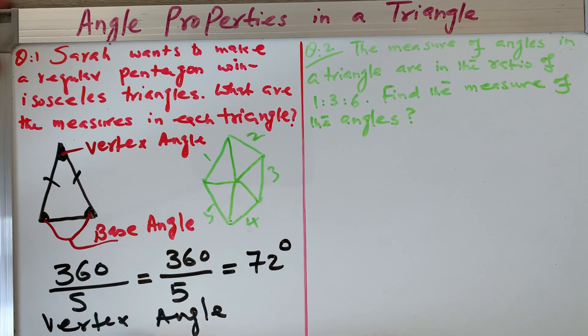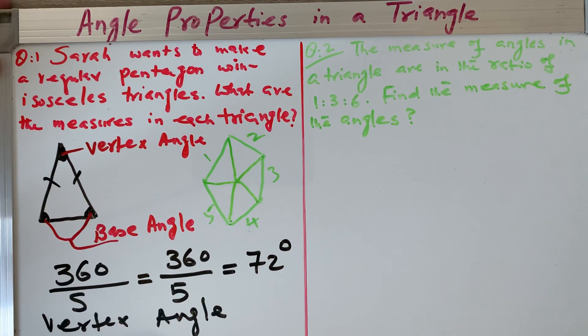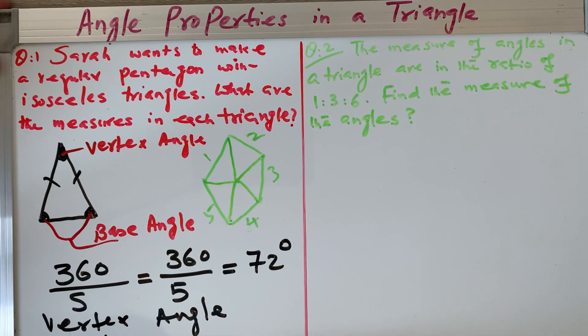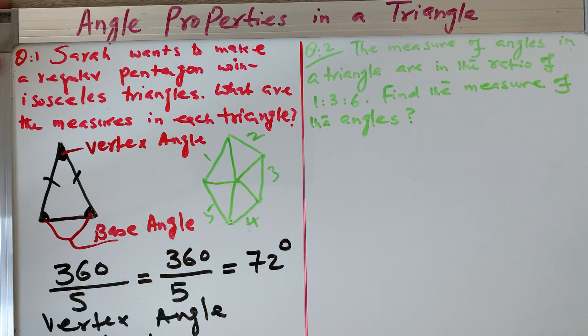Now we have to find out the base angle because we have to find out all three angles. The question is asking what are the measures in each triangle. So next to calculate is the base angle. Formula you have to remember: 180, that is sum of the interior angles in any triangle.